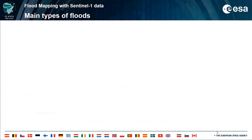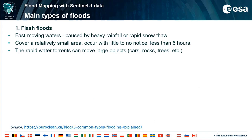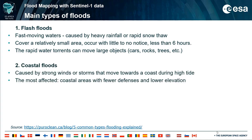The main types of floods are: first, flash floods — fast-moving waters caused by heavy rainfall or rapid snowmelt that cover a relatively small area and occur with little to no notice, generally less than six hours. Rapid water torrents can move large objects such as cars, rocks, and trees. Second, coastal floods are caused by strong winds or storms moving towards a coast during high tide. When powerful waves breach the coast dune or dike, the area is usually flooded. Coastal areas with fewer defenses and lower elevation are the most affected.